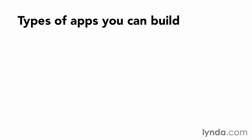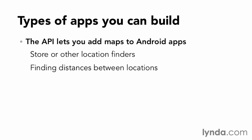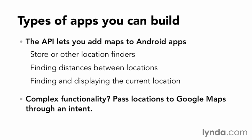Here are some of the kinds of apps you might want to build using the Google Maps API. Perhaps you want to build a store or other location finder, or an app that finds distances between locations, or find and display the user's current location using GPS or one of the other methods. The API provides all of this functionality. I'll also describe later in the course how to take a location and pass it to Google Maps through an Android intent.